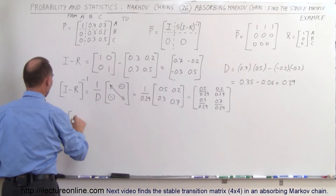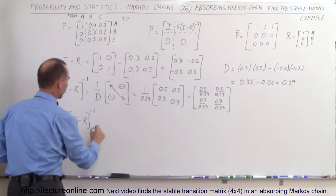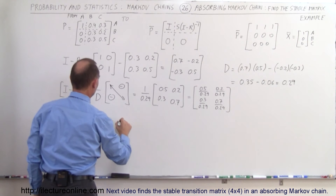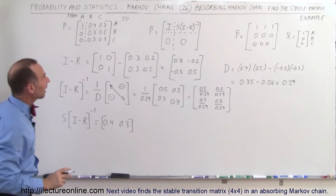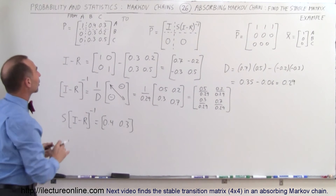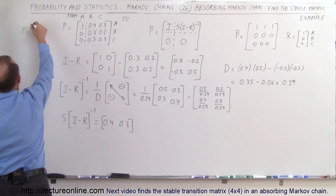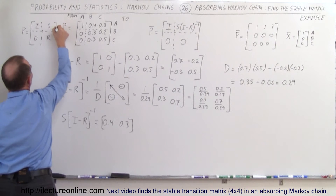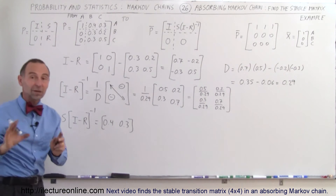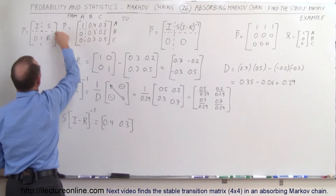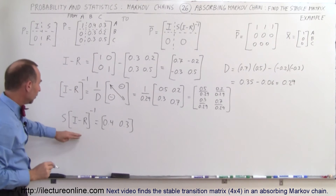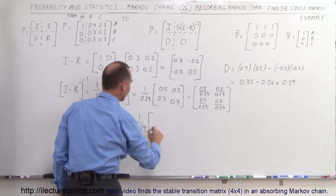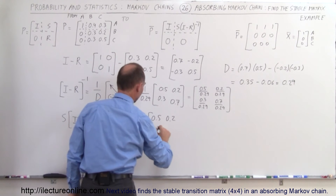We're going to take S times (I − R)⁻¹. The S matrix contains the elements [0.4, 0.3] from the original P matrix — these are the two elements in the upper-right region. The R matrix is the four elements in the lower-right region. So we multiply S = [0.4, 0.3] times (1/0.29) × [0.5, 0.2; 0.3, 0.7].